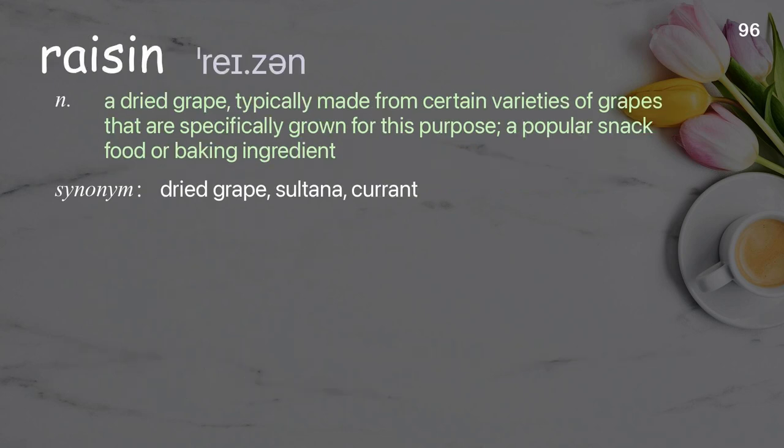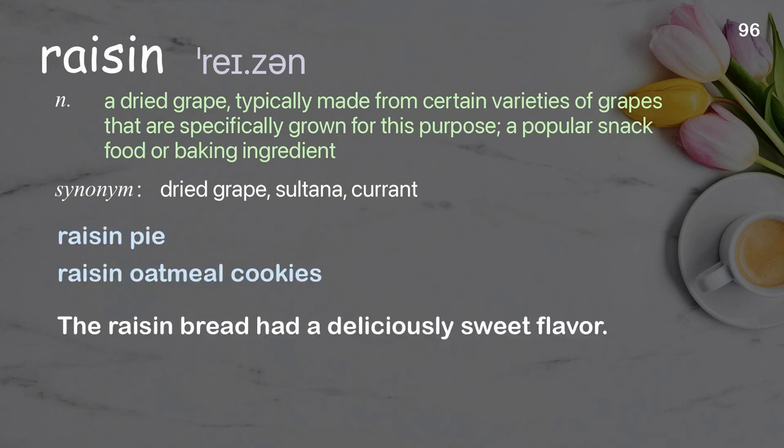Raisin. A dried grape, typically made from certain varieties of grapes that are specifically grown for this purpose; a popular snack food or baking ingredient. Examples: raisin pie, raisin oatmeal cookies. The raisin bread had a deliciously sweet flavor.